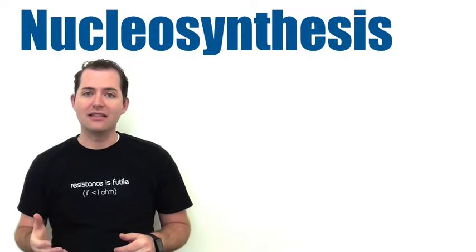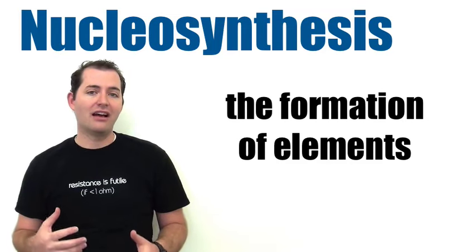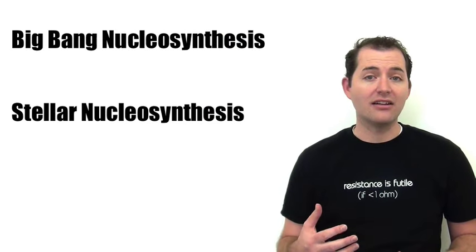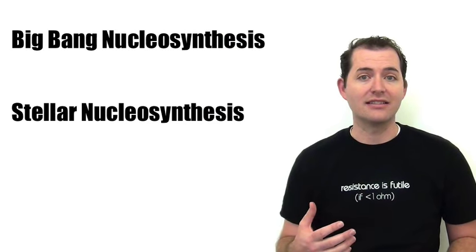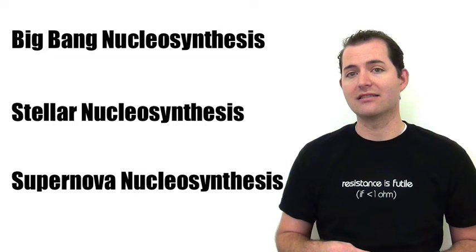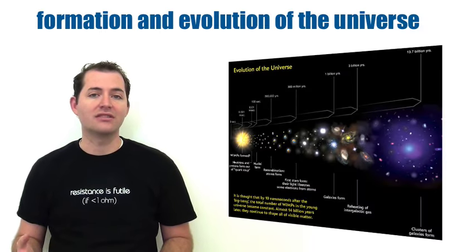Let's talk about nucleosynthesis, which is the formation of elements. There are three main types of nucleosynthesis: big bang nucleosynthesis, stellar nucleosynthesis, and supernova nucleosynthesis. All three of these are related to the formation and evolution of the universe.